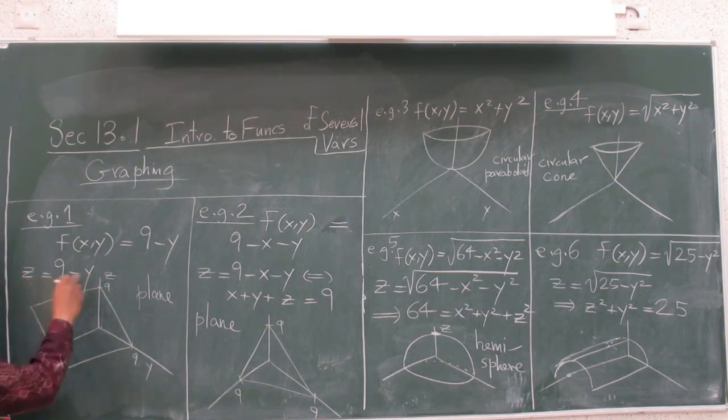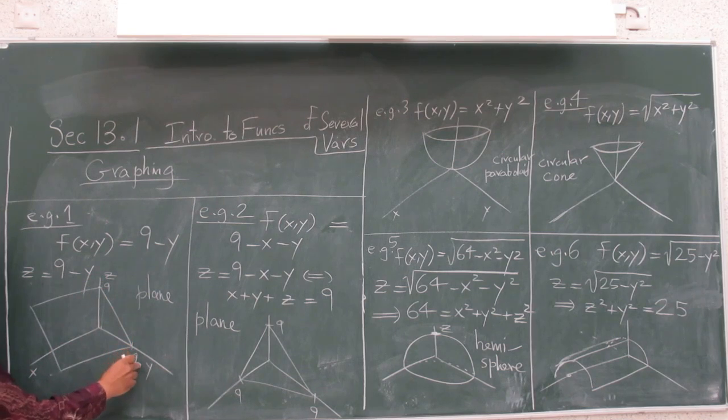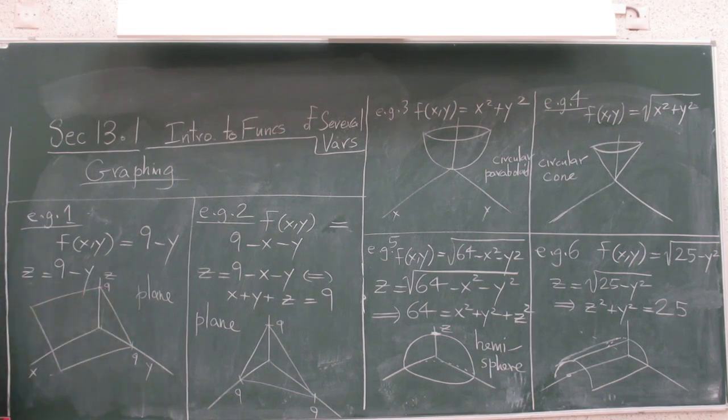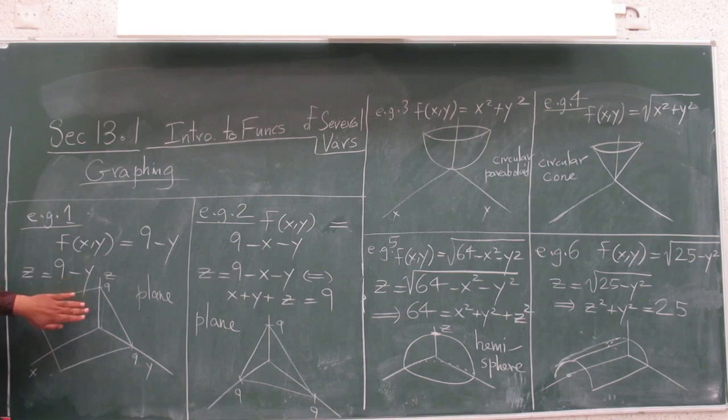You make the line y + z = 9 in the yz-plane. It goes through y = 9 or z = 0, and goes through y = 0 or z = 9. Then you extend it parallel to the x-axis, and that's the plane. Of course it goes below the floor and into the other quadrants as well behind the wall, but I've only shown you the part from the positive octant.